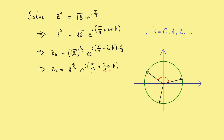The first solution has angle pi over 12, which is 15 degrees. This makes sense because going to the power 3 adds the angle 3 times, and 3 times pi over 12 gives 45 degrees — our original angle. Setting k equal to 0 gives the first solution, k equal to 1 gives the second solution adding 120 degrees, k equal to 2 gives the third solution. Going further yields no new numbers, so we stop at k equals 2.